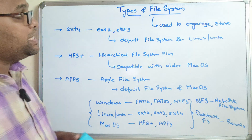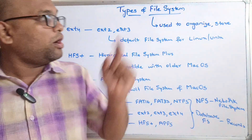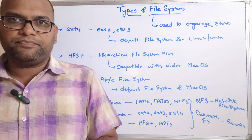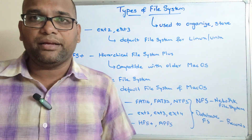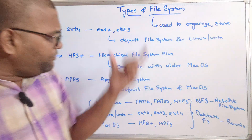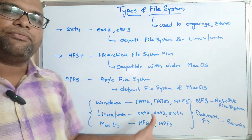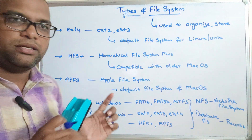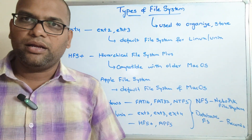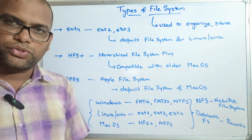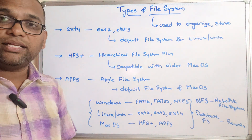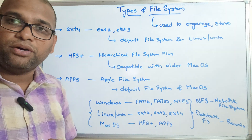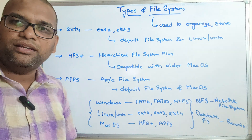A file system is mainly used to organize, store, and manage files. A file consists of related data, and every operating system supports different file systems. Hope you understood the different types of file systems. If you enjoyed the session, please like and share it with your friends, and don't forget to subscribe to our channel. Thanks for watching!